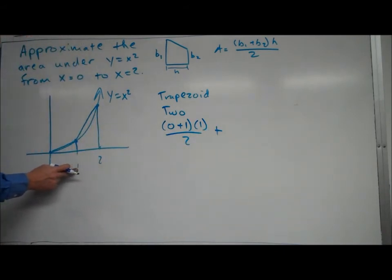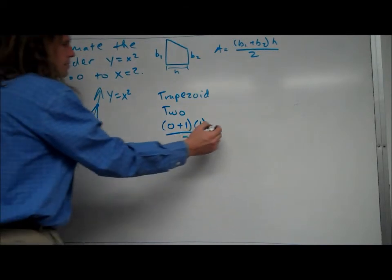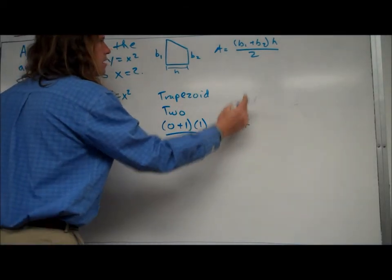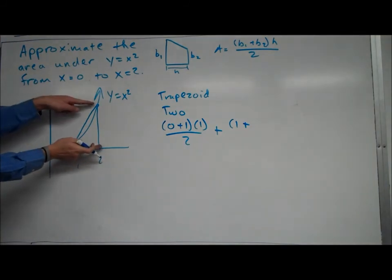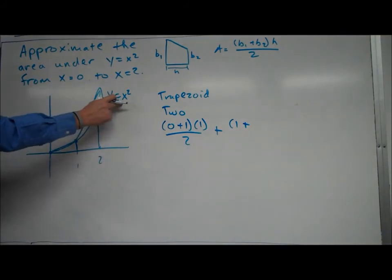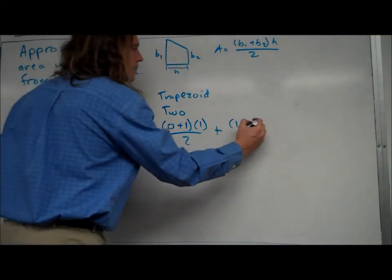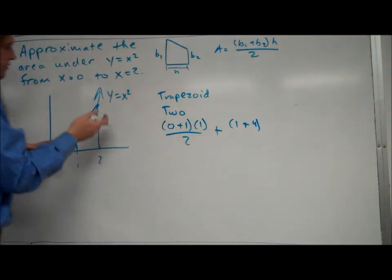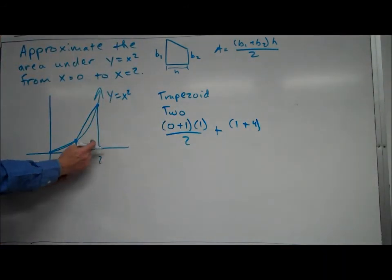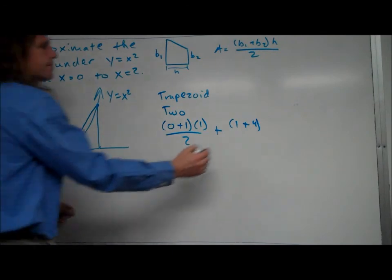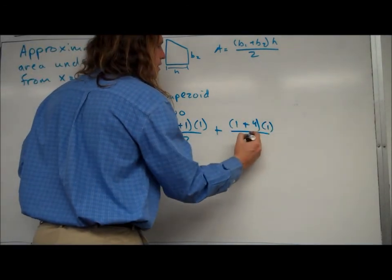The next one here, we have at x equals one, the height here is one, like we just talked about before, so that's base one. For base two, it's whatever this height is here, so we just take two, plug it in here, square it, get four. That's the value of base two. The height is the distance between the two bases, which is one. Divide that by two.